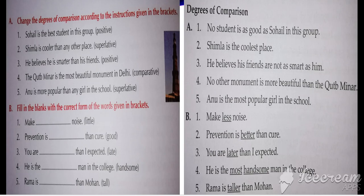Now part B: fill in the blanks with the correct forms of the words given in the bracket. First: 'Make less noise.' Second: 'Prevention is ___ than cure' — 'good' is given, and we need the comparative, so the answer is 'better': 'Prevention is better than cure.' Third: 'You are ___ than I expected' — 'late' is given, comparative is 'later.' Fourth: 'He is the ___ man in the college' — 'handsome' is given, so 'most handsome.' Fifth: 'Rama is ___ than Mohan' — the answer is 'taller.'